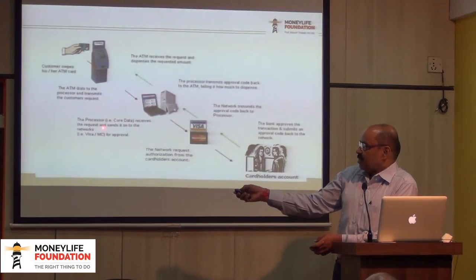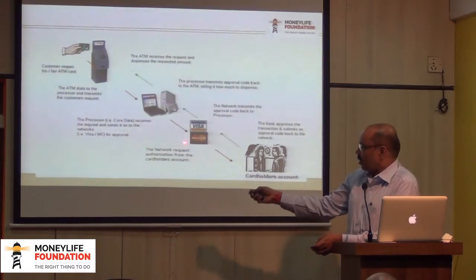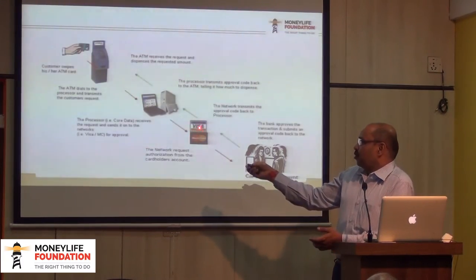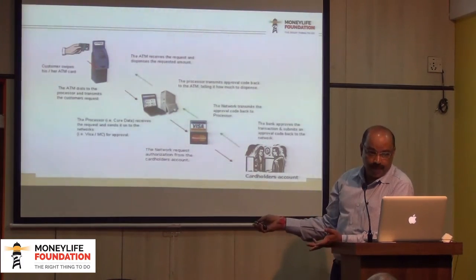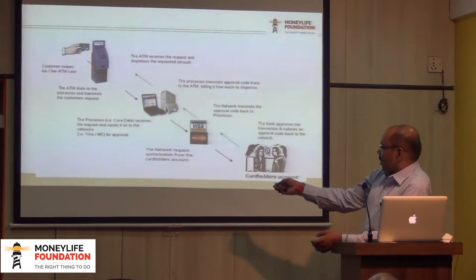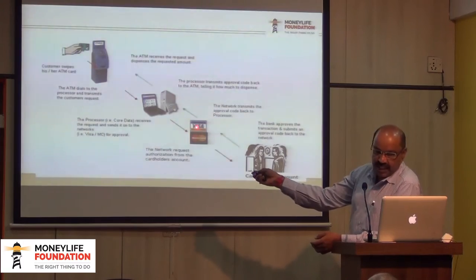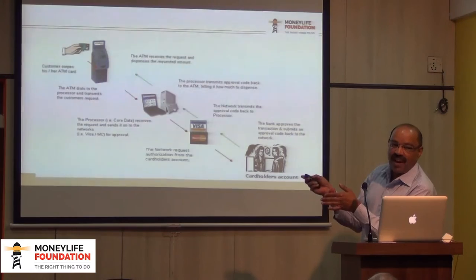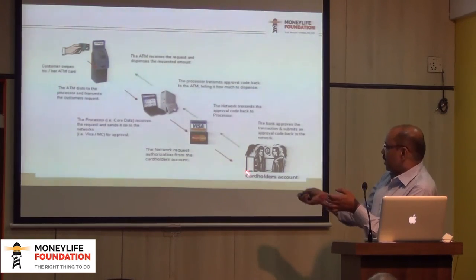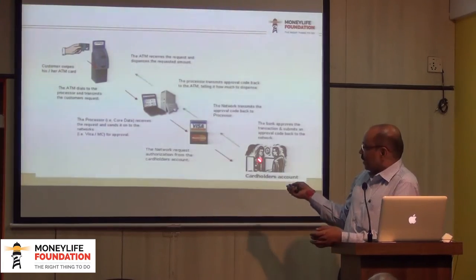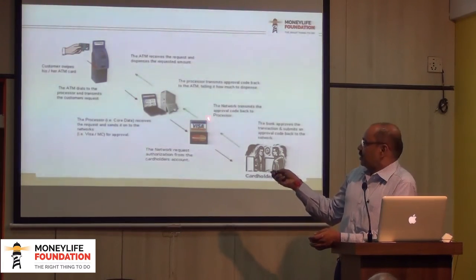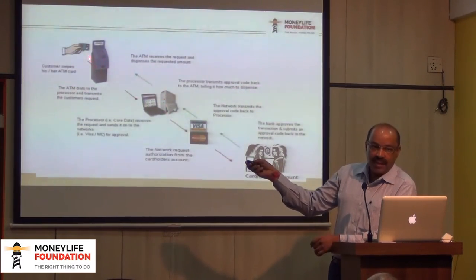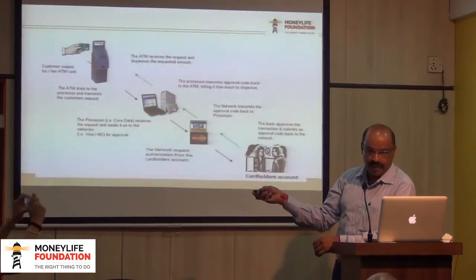The processor passes the request on to the network — the facilitator — which includes Visa, Mastercard, and RuPay (NPCI). This network switch sends the request to the bank. All of this takes place within milliseconds. The transaction is authorized and approved, a code is sent back to the facilitator, then to the processor, then to the ATM — and there you get your money.